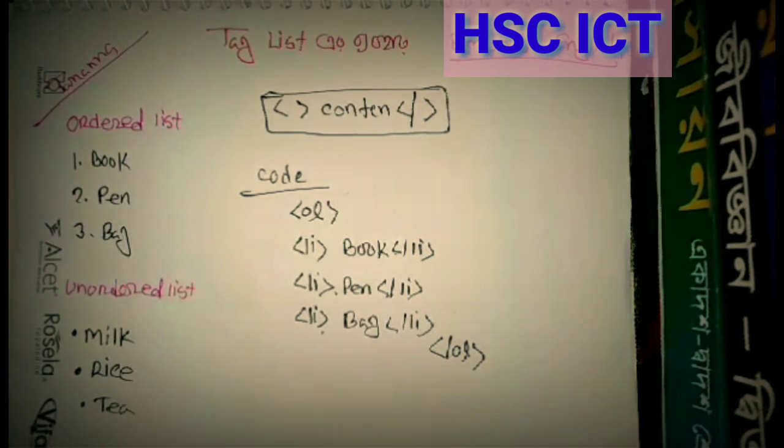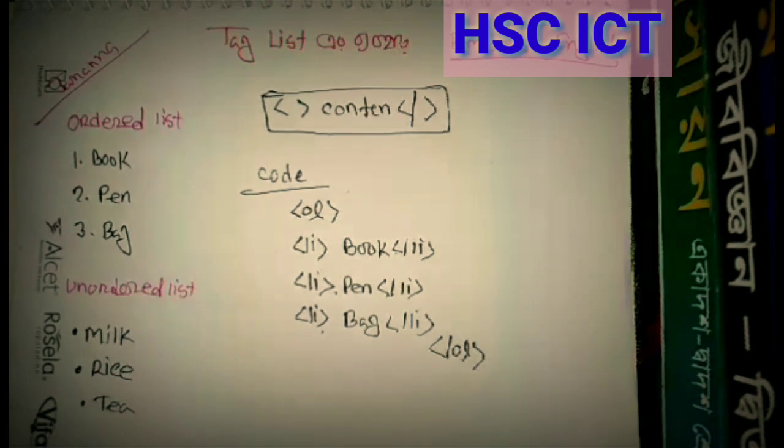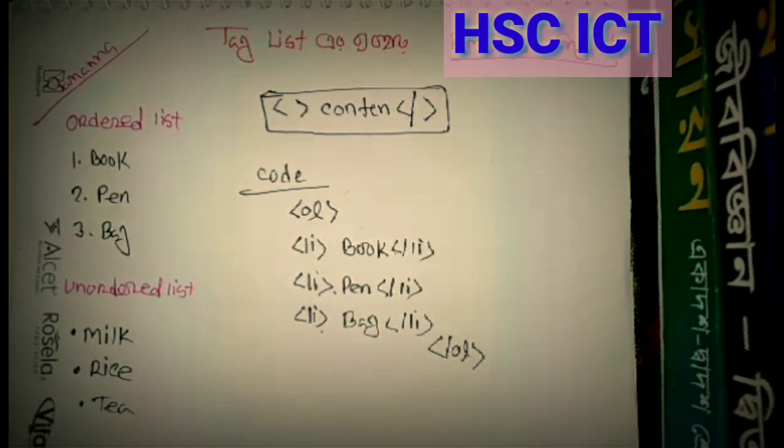We can see this list automatically numbered: 1. book, 2. pen, 3. bag.